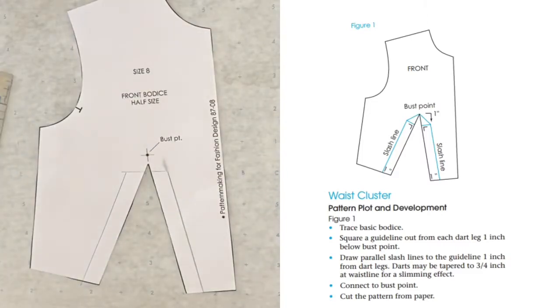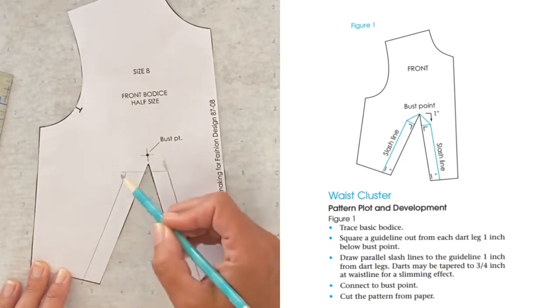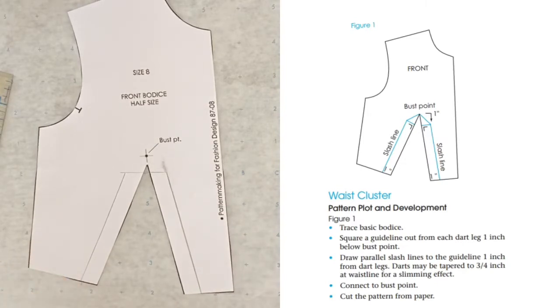We're drawing our parallel slash lines to the guideline that's one inch from the dart legs. It's an option if you want to taper them to three-fourths inch at your waistline—they're claiming it's going to make a slimming effect. I'm just going to follow along with the book this time, but they threw that out there as an option.